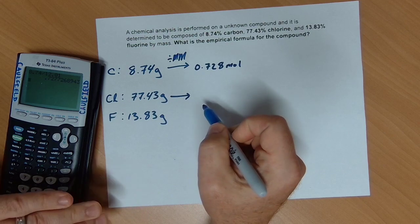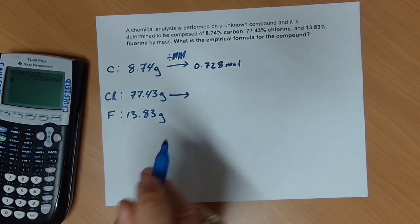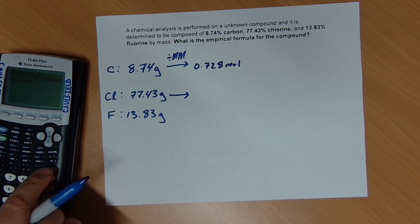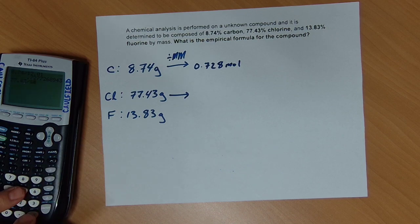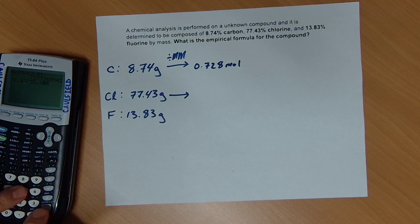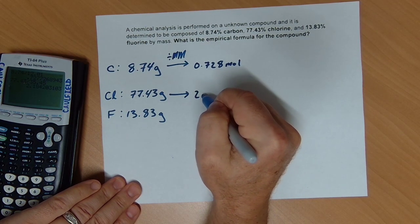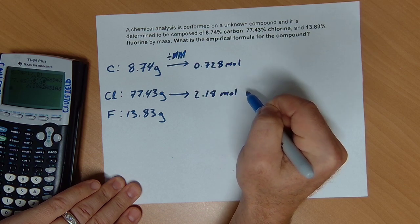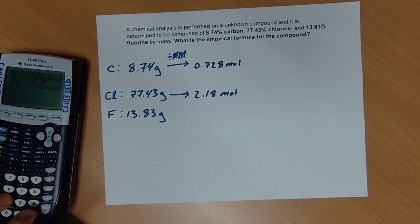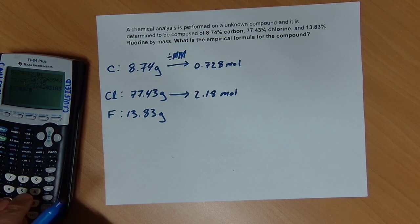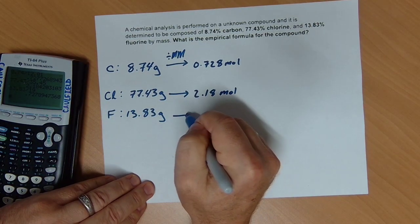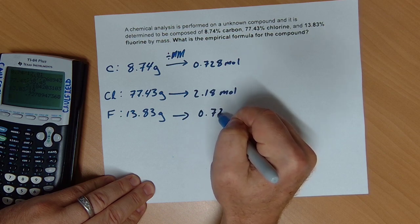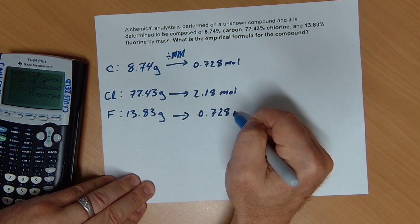Divide by the molar mass of chlorine specifically. So this is 77.43 divided by 35.45. 2.18 mole. And then I need to do the same for fluorine, which is 0.728 rounded.